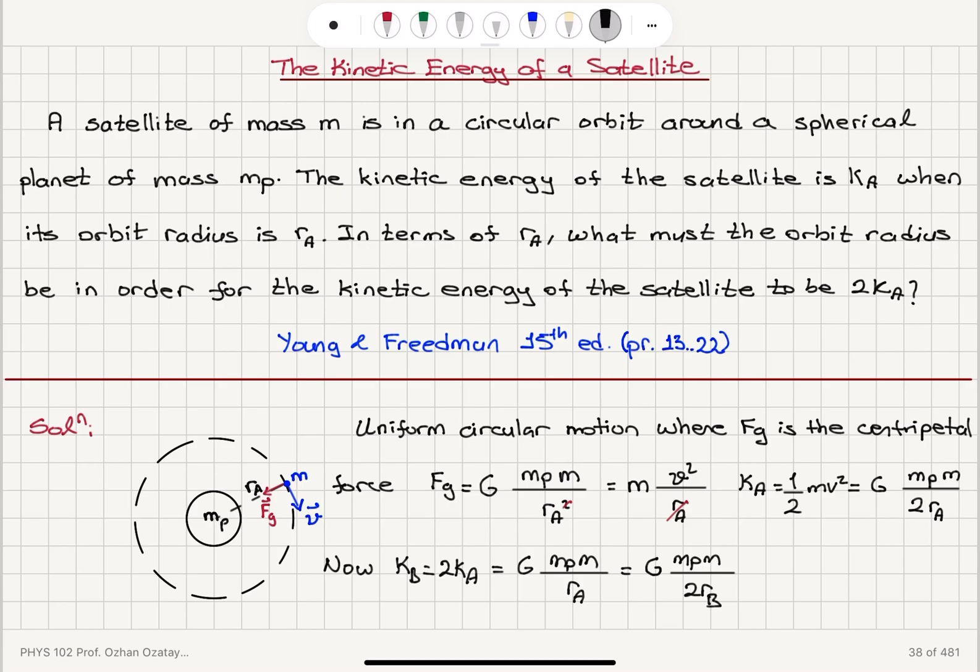Now, you can see that G mp times m's cancel, and I find that 2 r b must be equal to r a. So for its kinetic energy to increase, the satellite must approach this planet to a radial distance which is half of the original radial distance, so this should be equal to r a over 2.